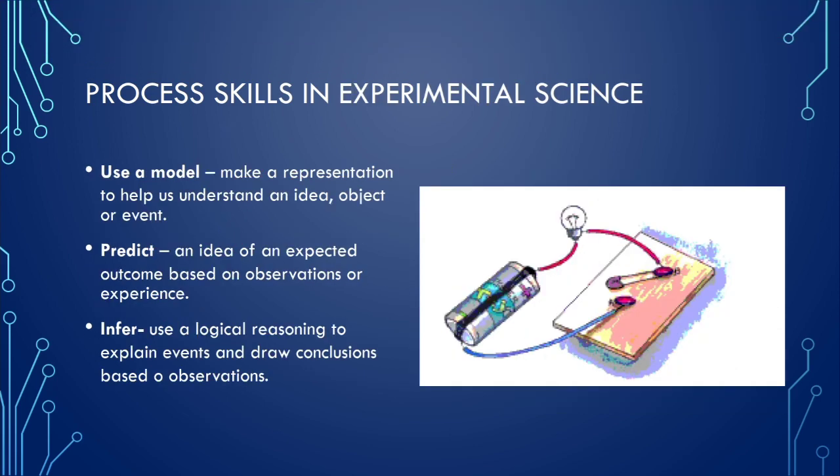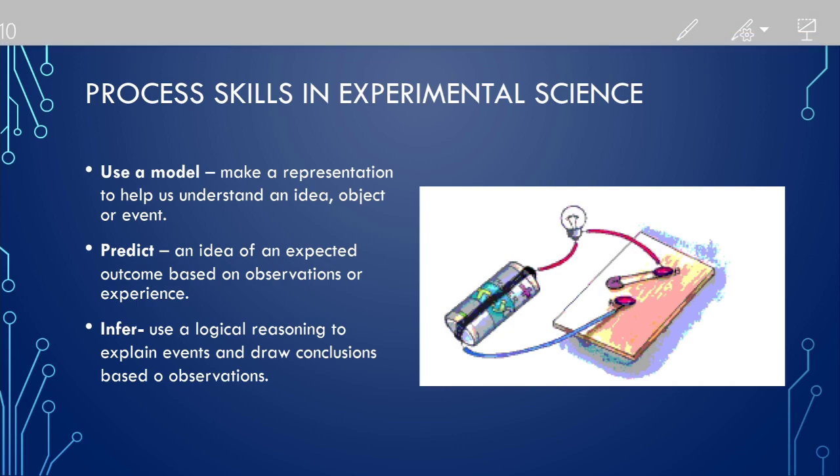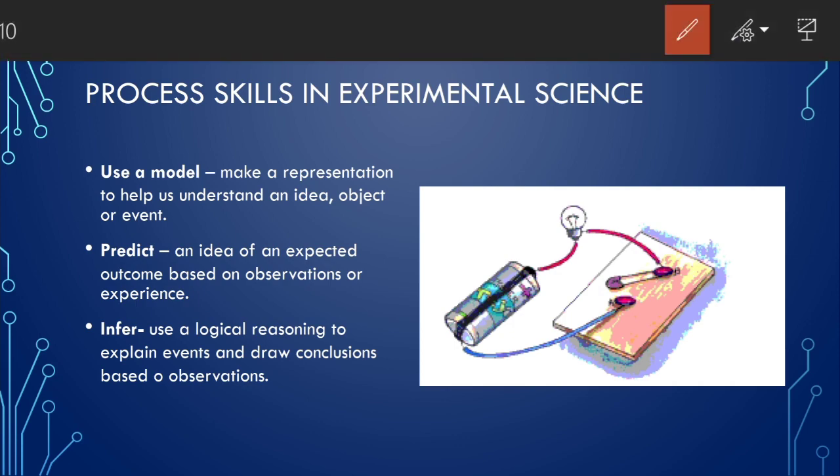Then we have another set of process skills used popularly in experimental science. Here we have already learnt what is an experiment in scientific method. Here we are using a model. Then we are predicting the behavior of a specific object and observing it using a model. Then we are inferring the conclusion.